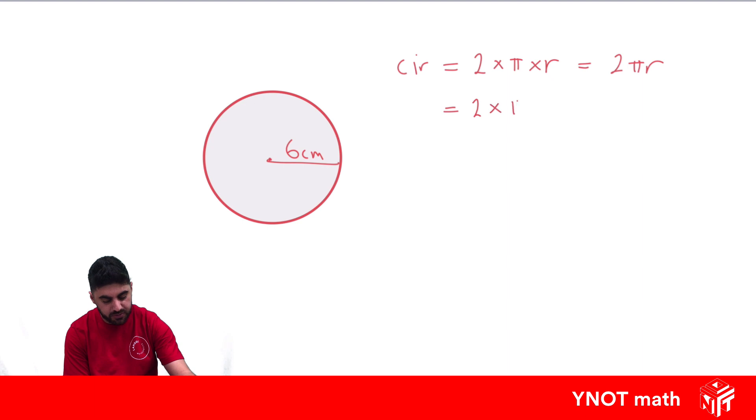So this one's going to be 2 times pi times the radius, which is 6. 2 times 6 is 12, still need to times it by pi. And that's going to give us 37.7 centimeters to one decimal place.